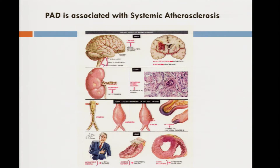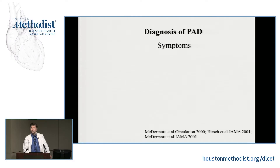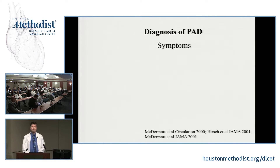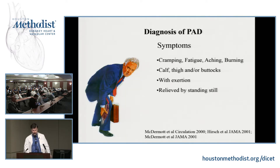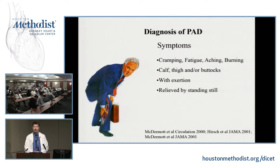How do we recognize this disease? Let's talk about symptoms. What do these patients typically have? They're having pain with walking — pain in their calf or thigh with walking. Sometimes it's just a burning or fatigue. They have lower extremity symptoms in the calf, thigh, or buttocks. The big clue that it is peripheral arterial disease is that it goes away when they stand still.